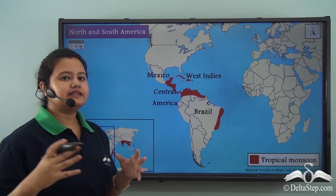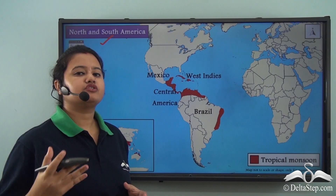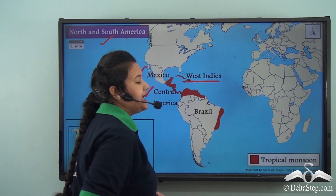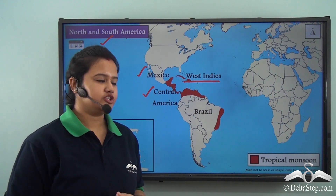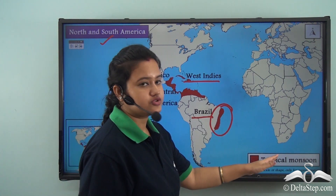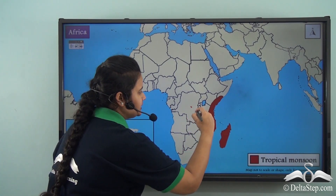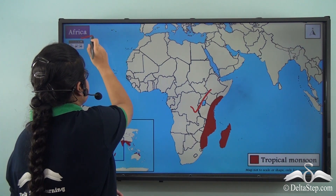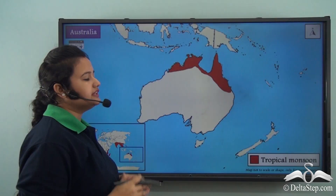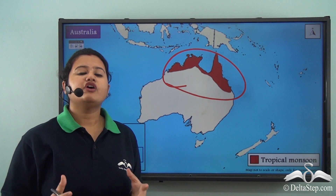This biome is also spread across the continents of North and South America. In North America, Mexico, Central American countries, and the West Indies experience the tropical monsoon region. In South America, the eastern side of Brazil experiences tropical monsoon. The southeastern parts of Africa and the northern parts of Australia also experience this tropical monsoon climate.